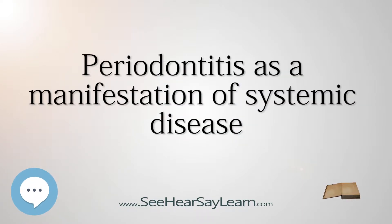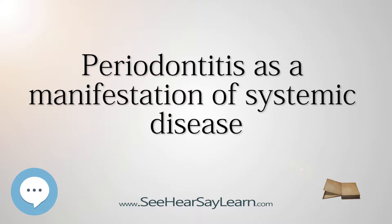Periodontitis as a manifestation of systemic diseases is one of the seven categories of periodontitis as defined by the American Academy of Periodontology 1999 Classification System. At least 16 systemic diseases have been linked to periodontitis. These systemic diseases are associated with periodontal disease because they generally contribute to either a decreased host resistance to infections or dysfunction in the connective tissue of the gums, increasing patient susceptibility to inflammation-induced destruction.